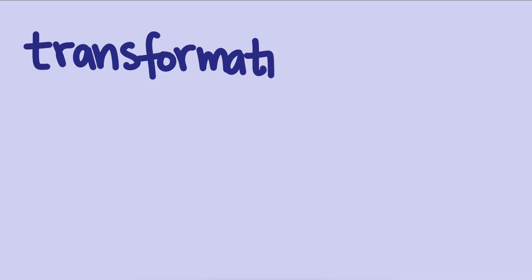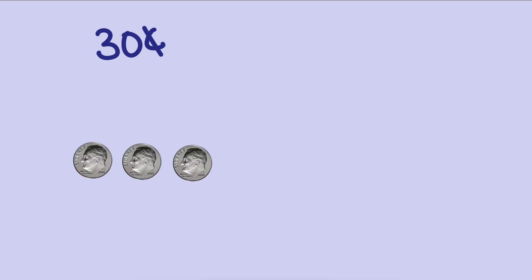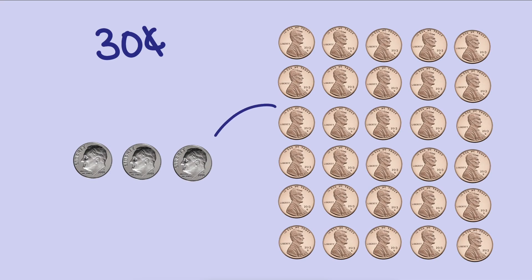To begin, I want to quickly talk about the relationship between transformations and unit conversions. The operations for each are exactly the same, but we think about them differently. I can represent 30 cents as 3 dimes or 30 pennies. To convert pennies to dimes, I multiply by 1 tenth to get 3 dimes. To convert from dimes to pennies, I multiply by 10.